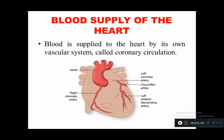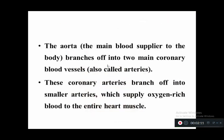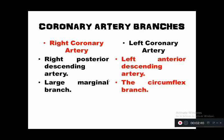The first question is blood supply of the heart, also known as coronary circulation. Blood is supplied to the heart by its own vascular system called coronary circulation. The aorta, the main blood supplier to the body, branches off into two main coronary arteries which branch further to supply oxygen-rich blood to the entire heart muscles.